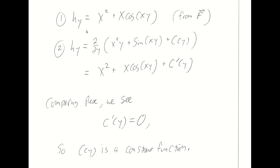From F hat, we know that h sub y looks like this. I also know from the expression for h that h sub y is the partial with respect to y of that expression. I can take that partial with respect to y, and I get this expression. I don't know what c(y) is, but if I take its derivative with respect to y, I get c prime of y. Now I can compare these two expressions. These components match up nicely, and it looks like c prime of y should be zero. The constant functions are those with zero derivative.